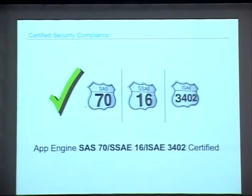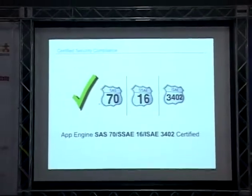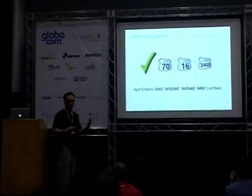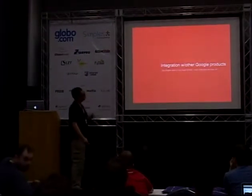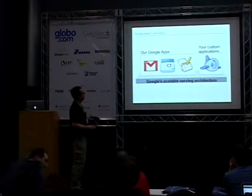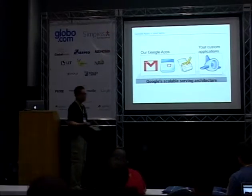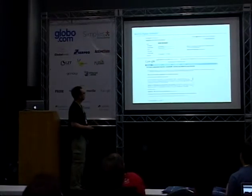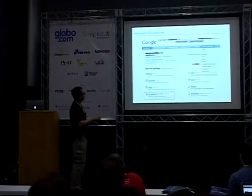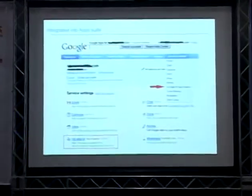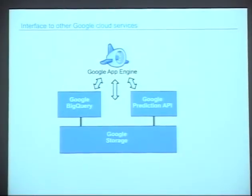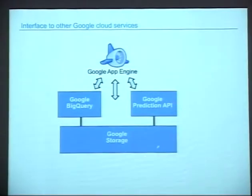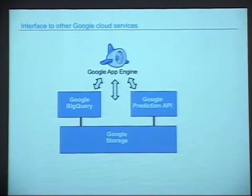We're compliant with security — all your apps and data are very secure. I can't even get into a data center without vice president approval, and we're certified to international standards. You can also roll your custom App Engine app alongside your existing Google Apps, so it shows up in your Google Apps control panel alongside Gmail and Calendar. Google App Engine is also a gateway to other Google Cloud services like storage, BigQuery, and Prediction.